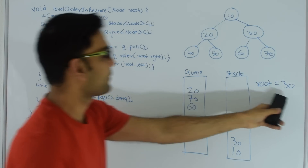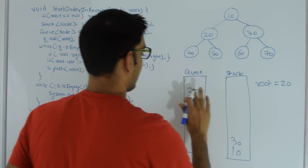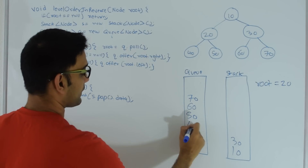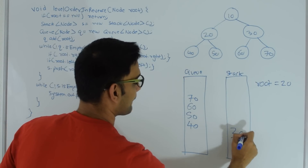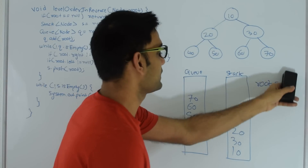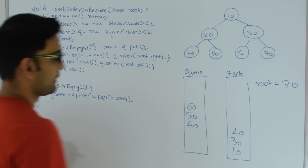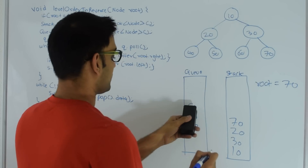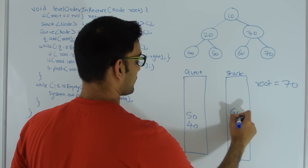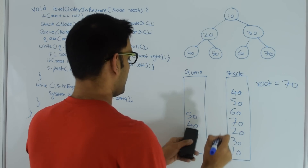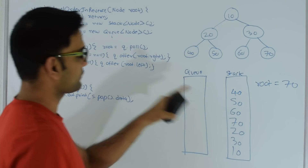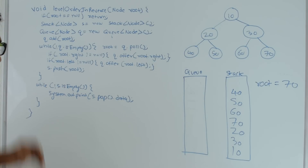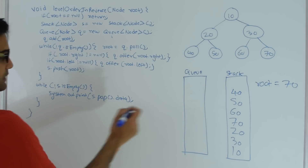Queue is still not empty so root becomes 20. 20 has a right child, 50, so that goes into the queue. 20 has a left child, 40, so that goes into the queue, and then 20 goes into the stack. Queue is again not empty so root becomes 70 and we remove that from the queue. 70 does not have a right or left child so we push 70 into the stack. Similarly, 60 and 50 and 40 don't have children so they go into the stack. Finally my queue is empty so I come out of the while loop and go through the elements of the stack one by one, popping and printing until the stack is empty.